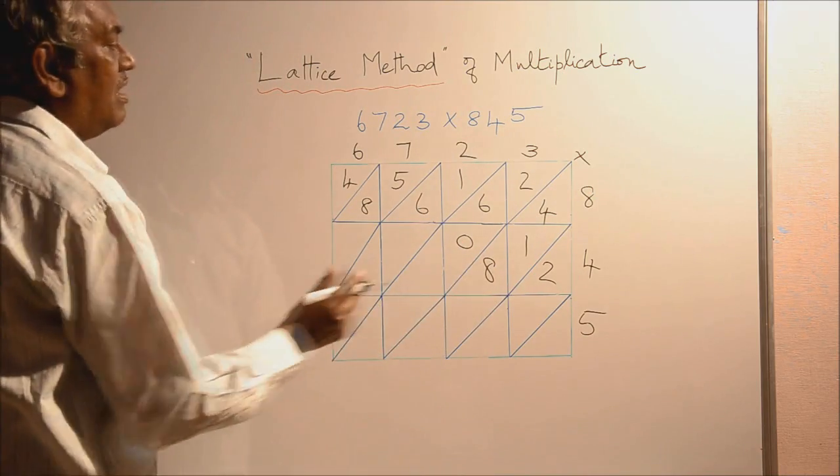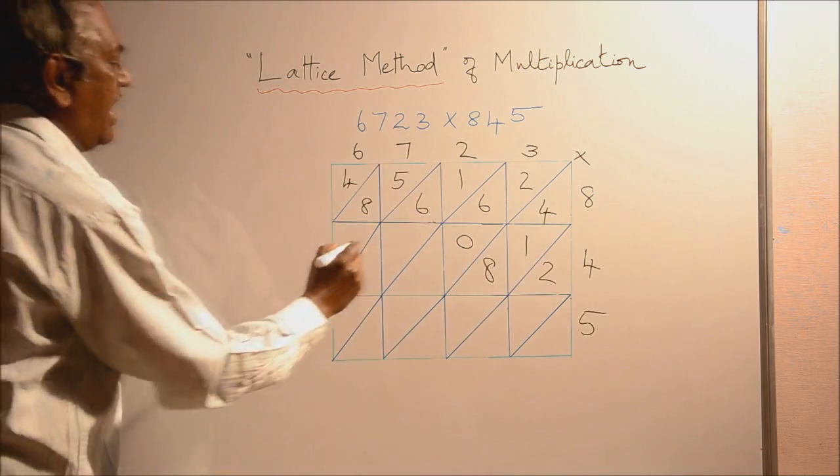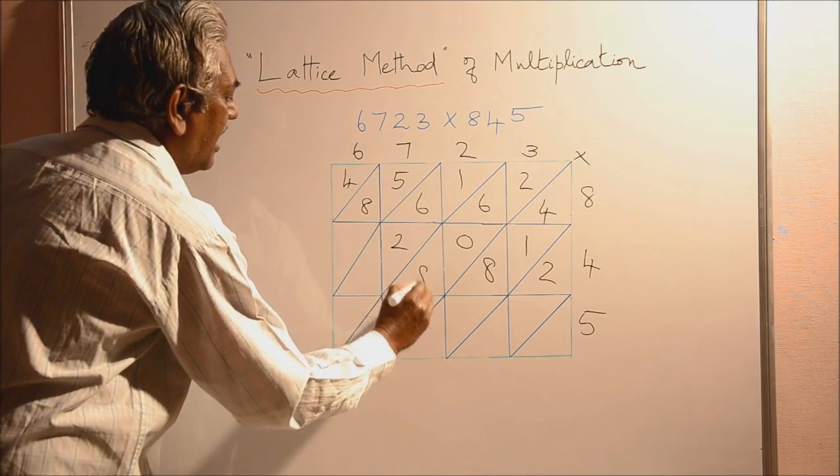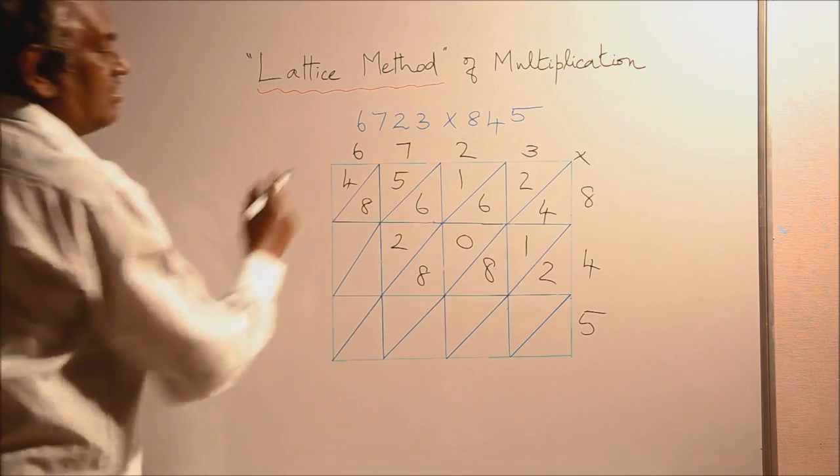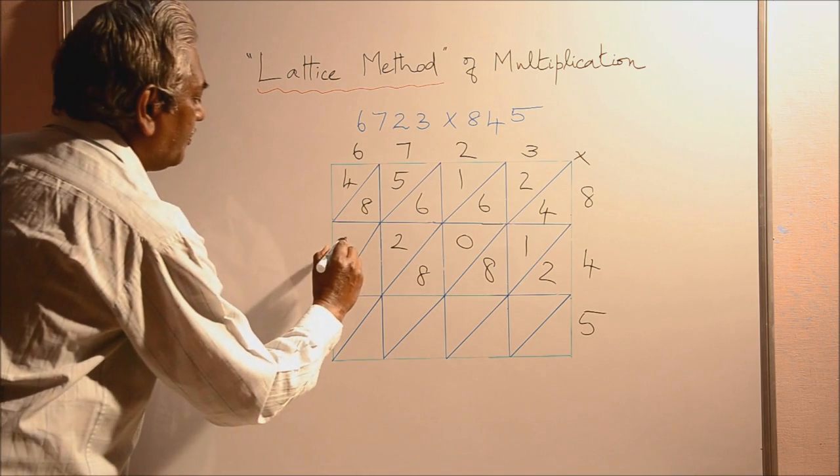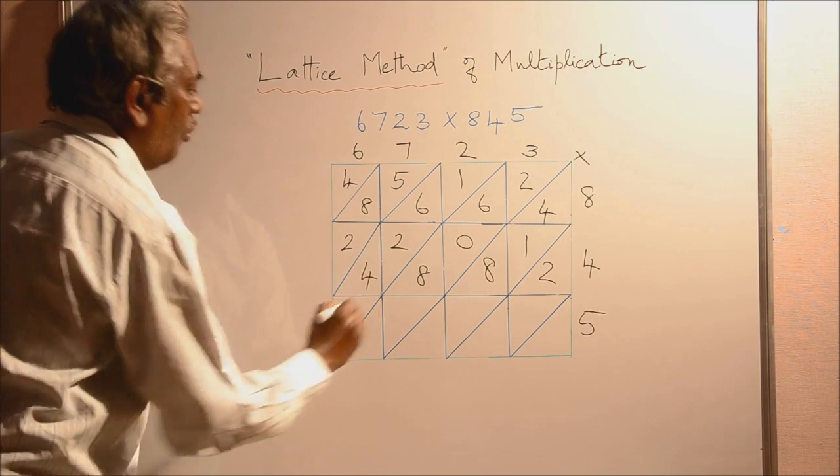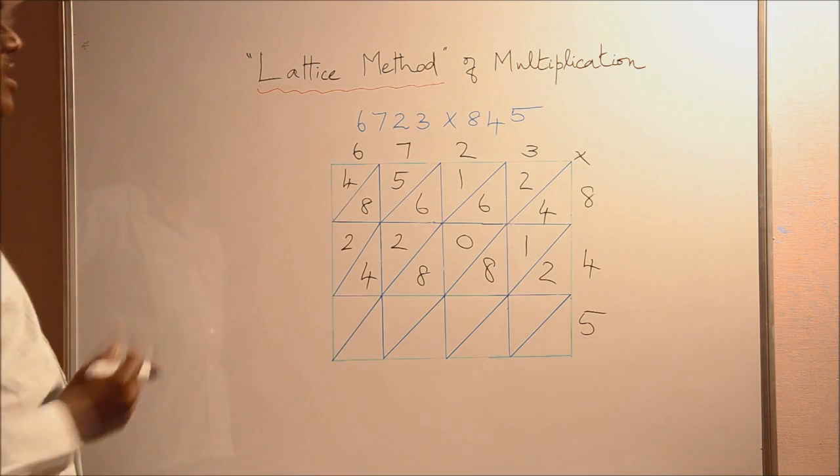4, 7's are 28. We write 2 here and 8 here. 4, 6's are 24. Write here 2 and 4. Now second row is completed.